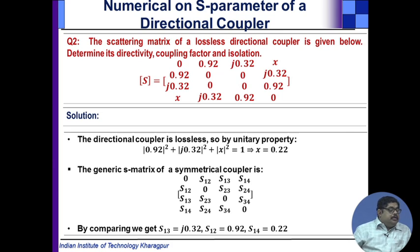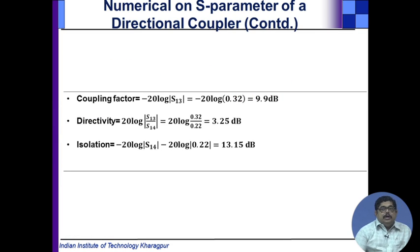In a symmetrical coupler we know this is the generic value that we have seen, and if we compare then we get the S13, S12, and S14 values. Once we have that, the coupling factor is minus 20 log S13, you can find out it is 9.9 dB. Directivity is 20 log S13 by S14, it is 3.25 dB. Isolation, and as you can verify that in dB scale we know I is equal to D plus C. D is 3.25, C is 9.9, their sum is 13.15 that is equal to I.